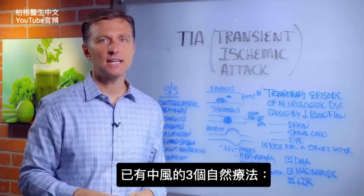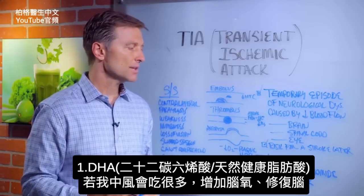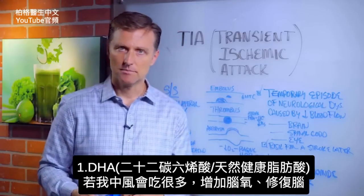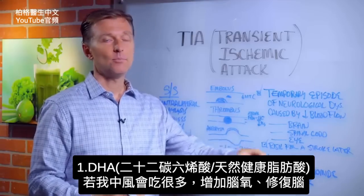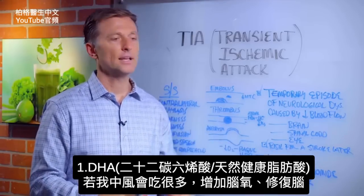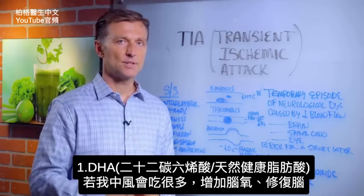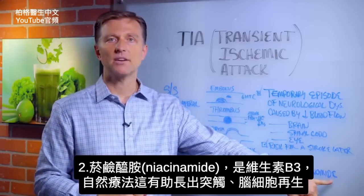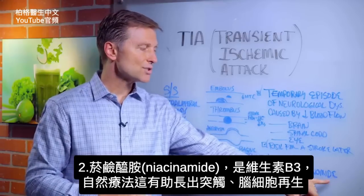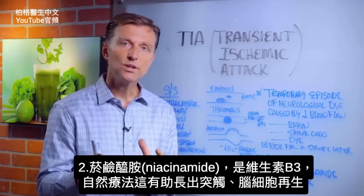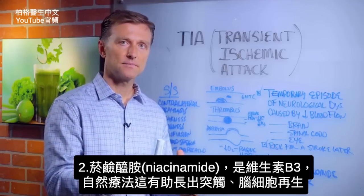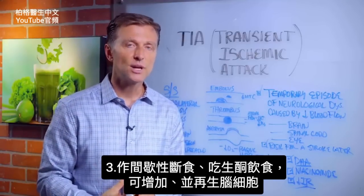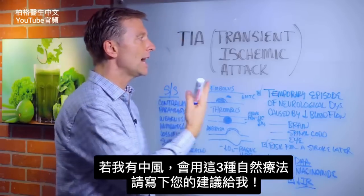If you already have a TIA or stroke, there are helpful things you can do. First, DHA — a natural healthy fat that has been shown to improve brain damage and increase oxygen to the brain. Second, niacinamide, which is vitamin B3, shown to regrow synapses and regenerate brain cells. Third, intermittent fasting with keto, which has been known to increase and regenerate brain cells.